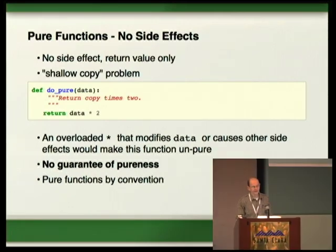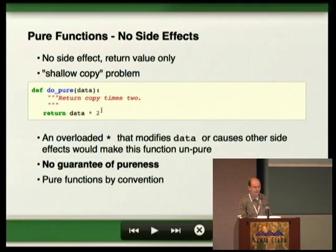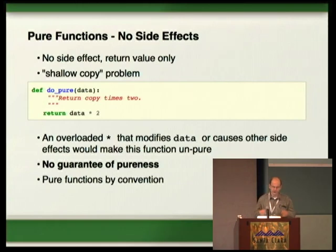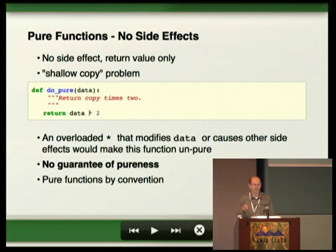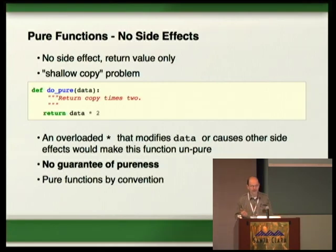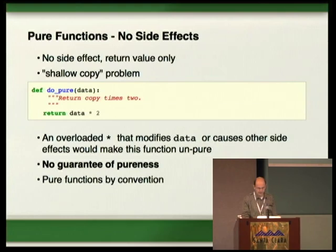You can try to write functions without side effects. It would look like this: a function that takes data and returns a copy multiplied by two. The problem — if this is a nested list, you can have what's called the shallow copy problem. You only multiply the list itself, but not the references in the list. Also, if somebody overloads the multiplication operator, a lot of things can happen that have side effects. There's no guarantee of pureness — you have a pure function by convention, but you cannot really enforce it with current Python.